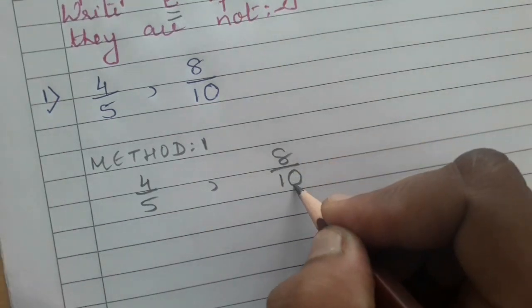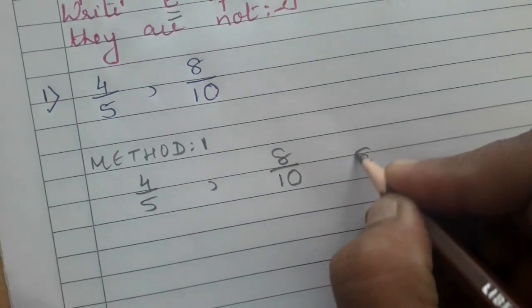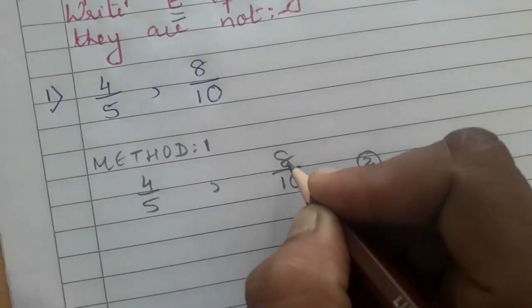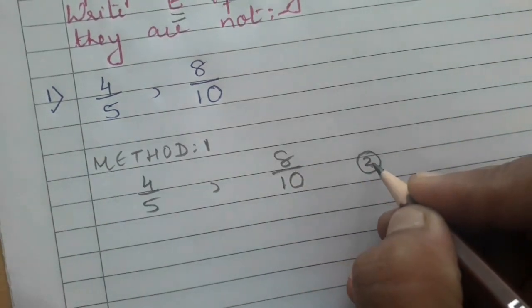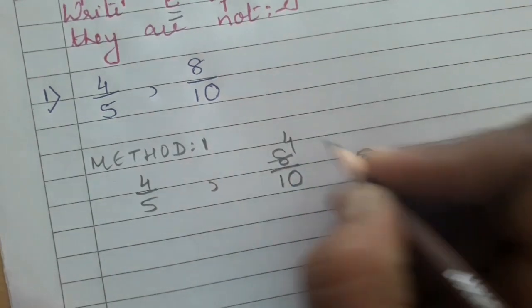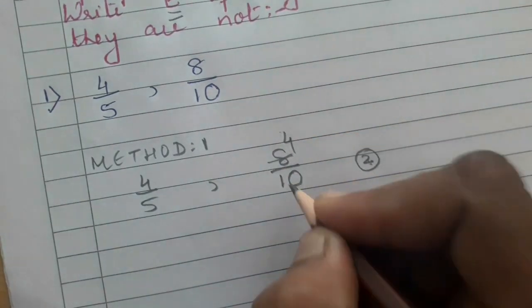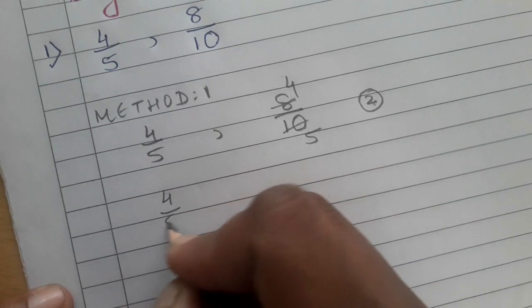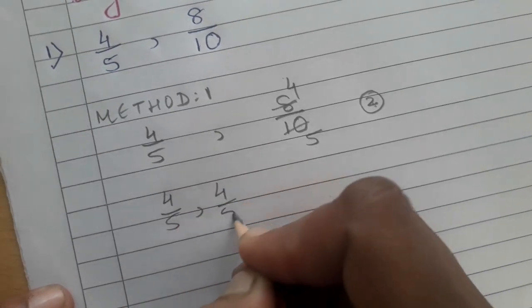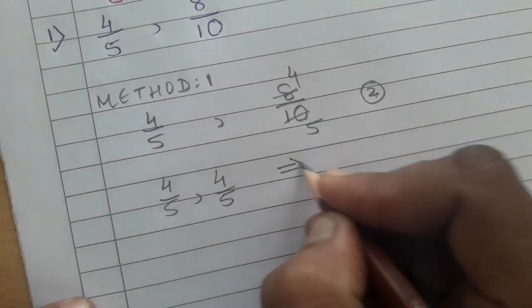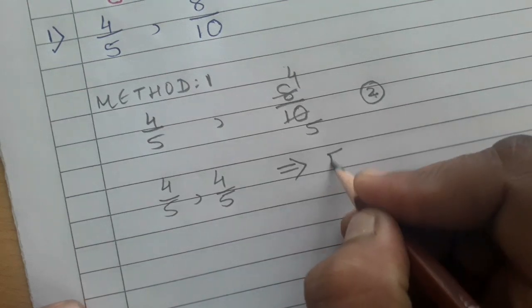Now 8 and 10 are both divisible by 2. In the 2 times table: 2 × 4 = 8 and 2 × 5 = 10. So the simplified form is 4 by 5, and 8 upon 10 also simplifies to 4 by 5. So you can write that they are equivalent.